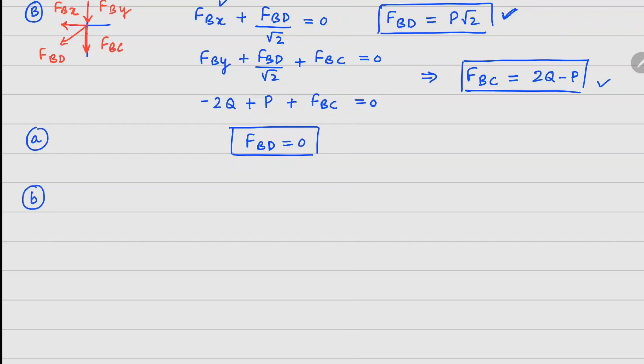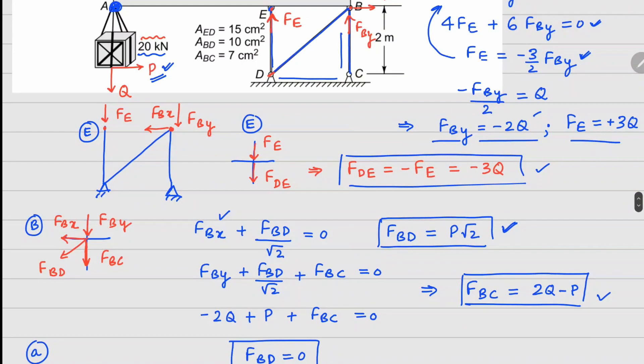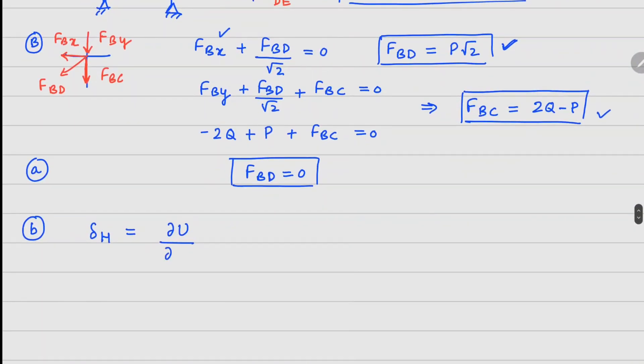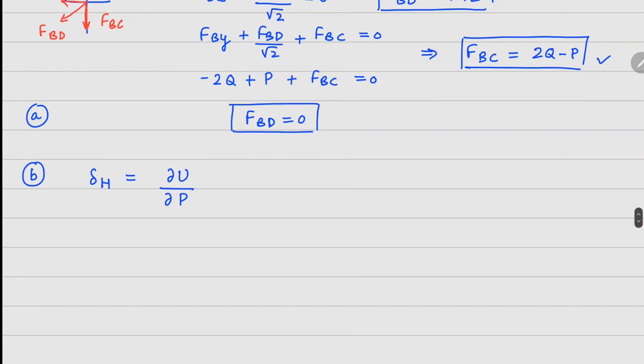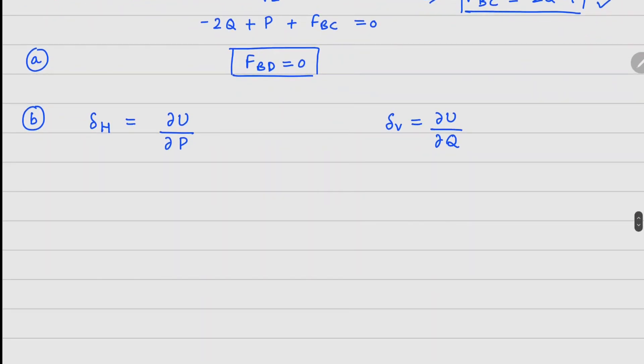This is the answer for part A. Now for part B, we are interested in the horizontal deflection at point A. For horizontal deflection at point A, the horizontal force is P here, so your strain energy will be derived with respect to P. Similarly, your vertical deflection is going to be derivative of U with respect to Q. The sense of displacement and force should be same, so we are expecting horizontal movement to be along P direction, meaning towards the right, and vertical going downwards.